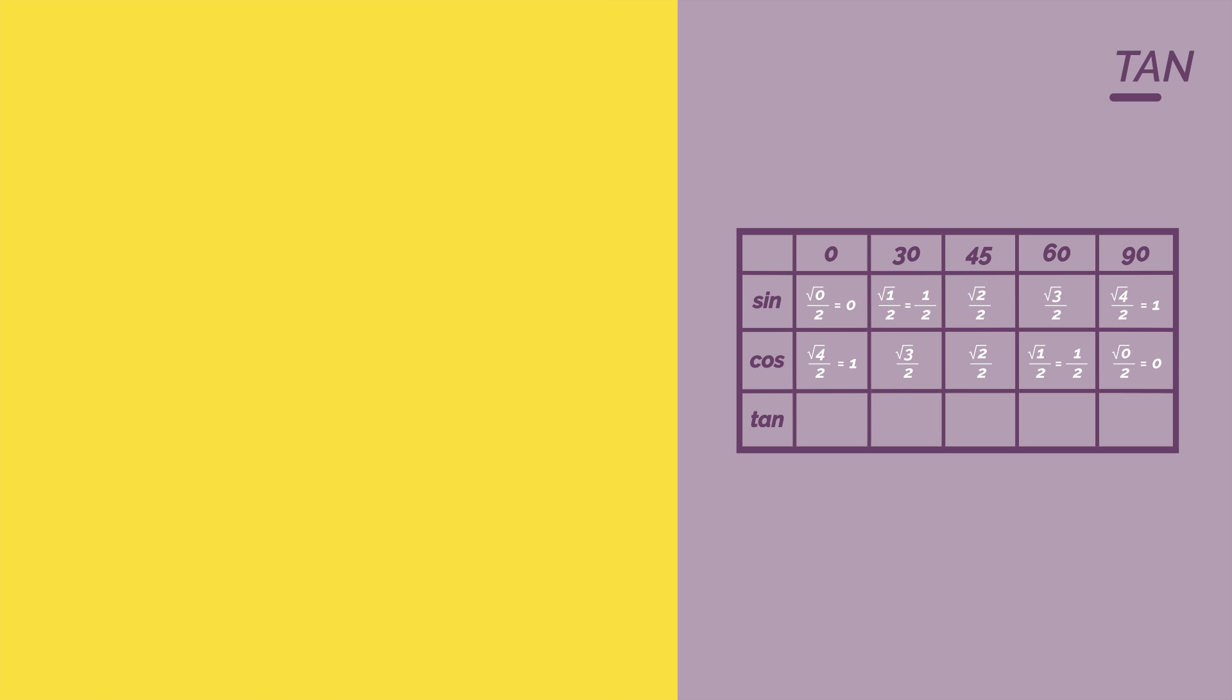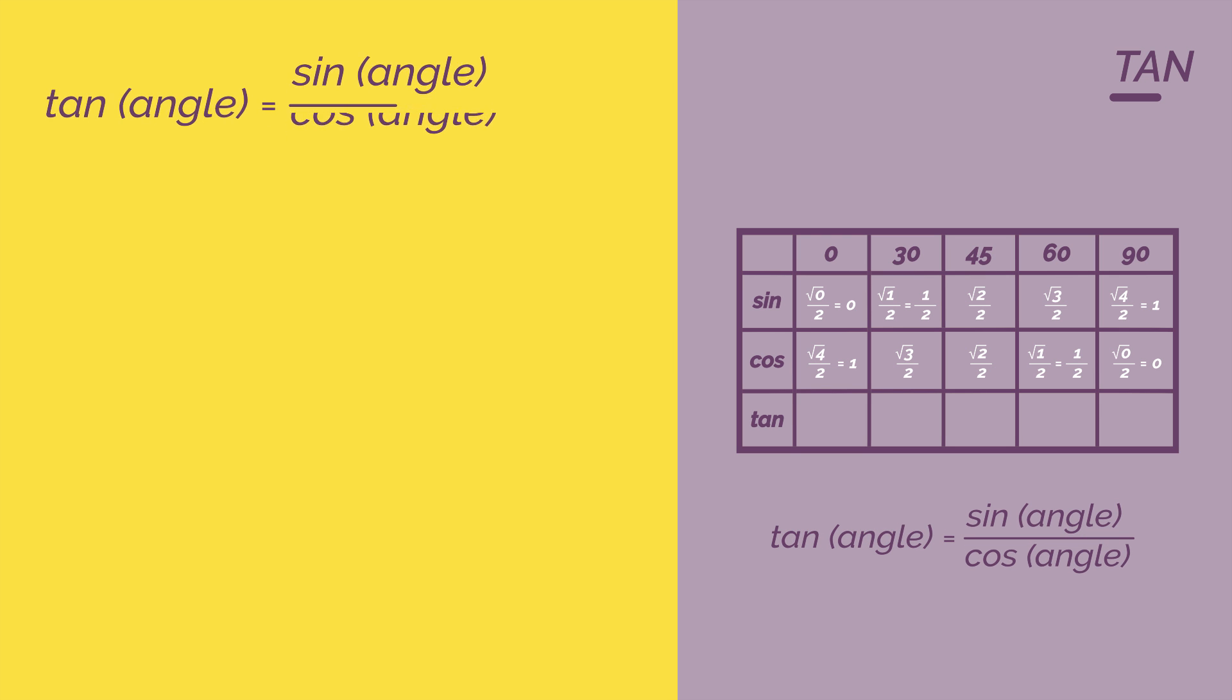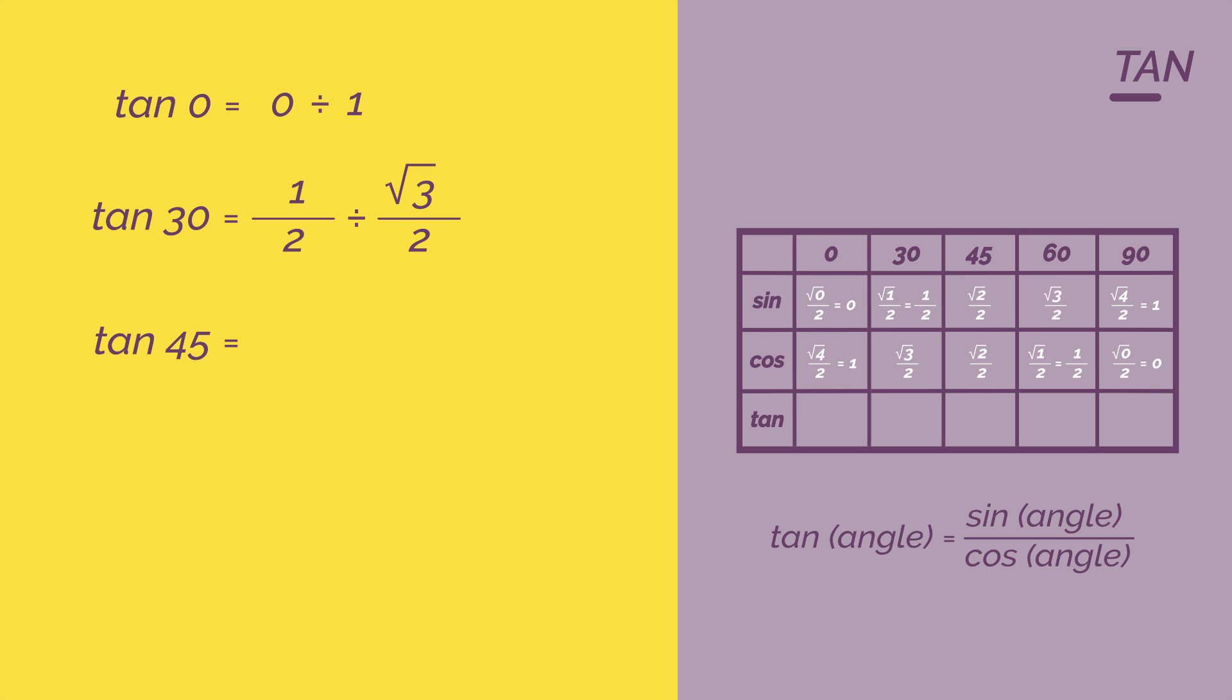So for tan, it's just a little bit different. We divide the sine by the cos. So tan zero would be zero divided by one. Tan 30 would be a half divided by root three over two. Tan 45 is root two over two divided by root two over two. 60 would be root three over two divided by a half.